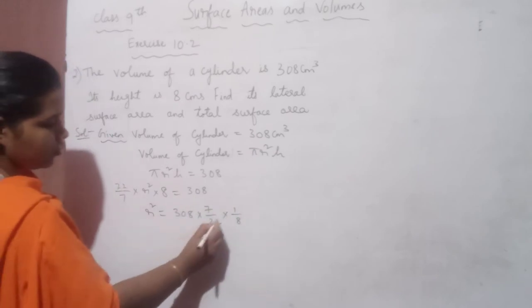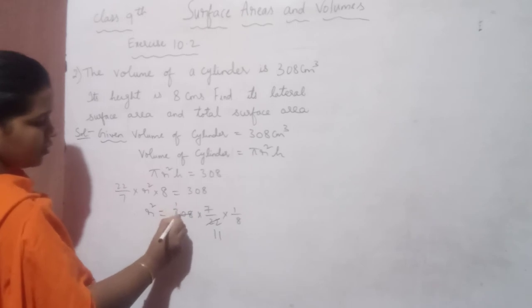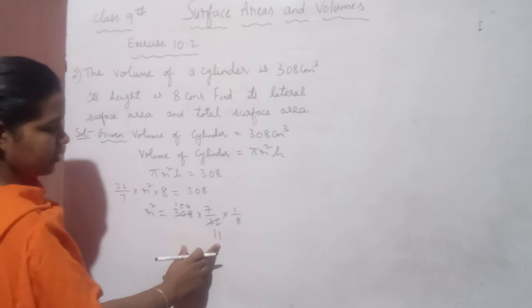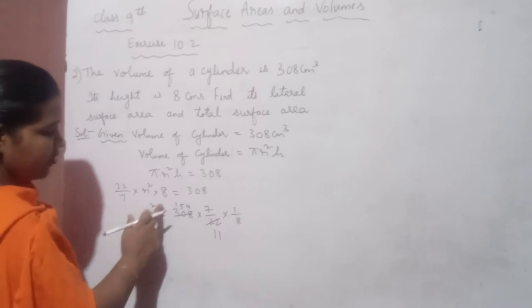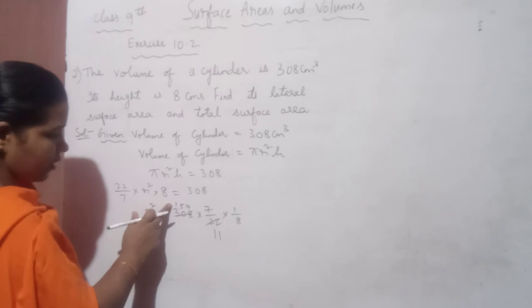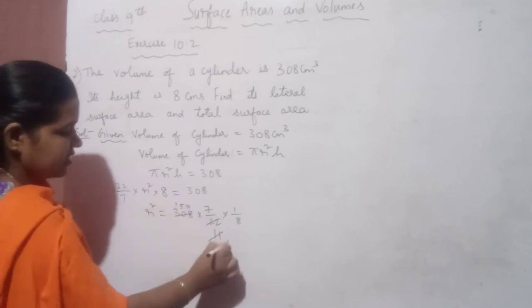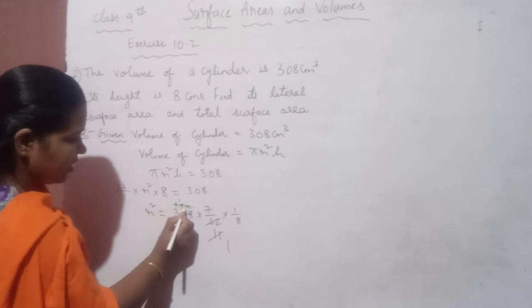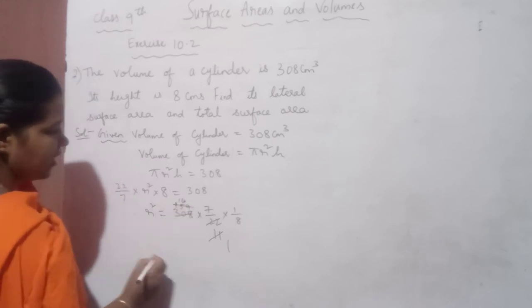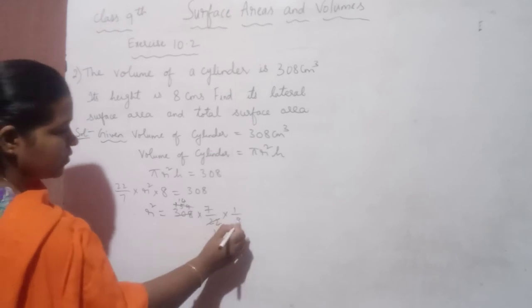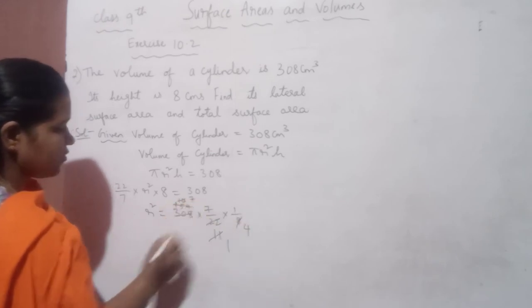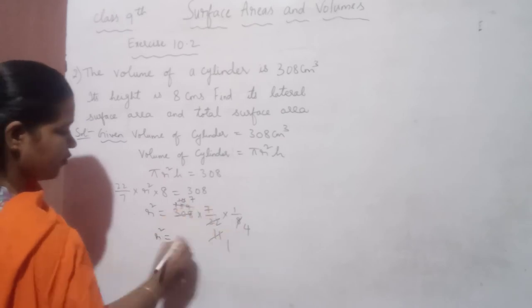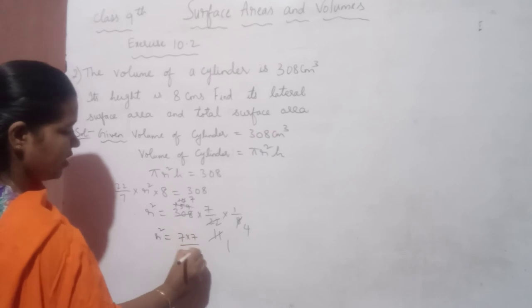Simplifying: cancel 2 with 2, then cancel with 11. After cancellation, we get 7 and 4 remaining. So R² = 7 × 7/4.